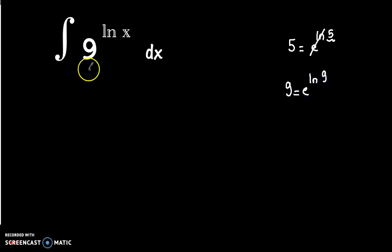So now we have the integral of e to the power ln 9 to the power ln x dx. But we know that x to the power a to the power b is equal to x to the power b to the power a, so we can switch between powers.